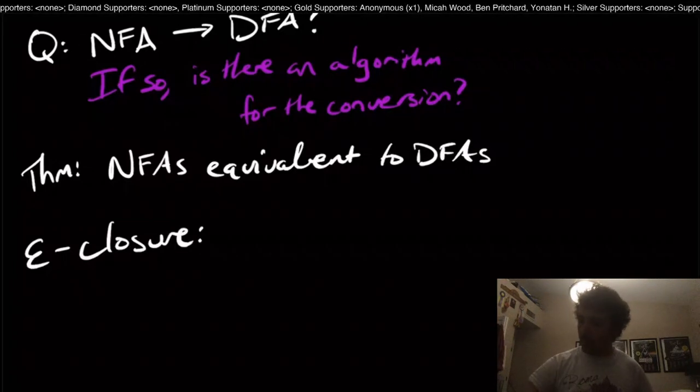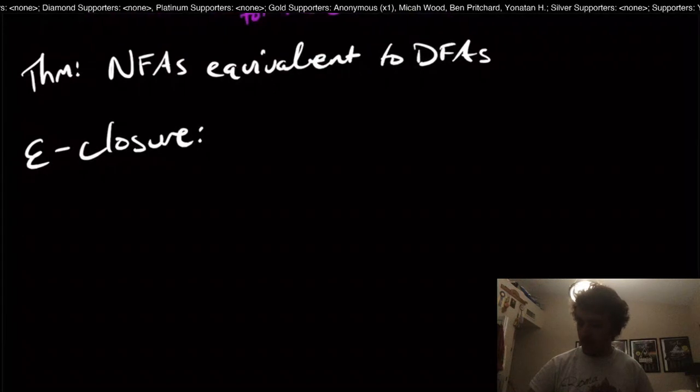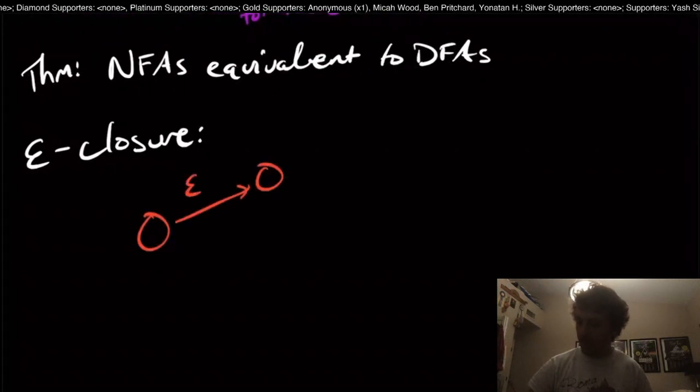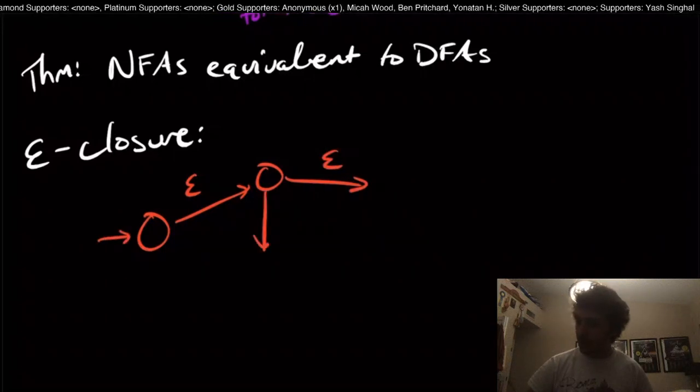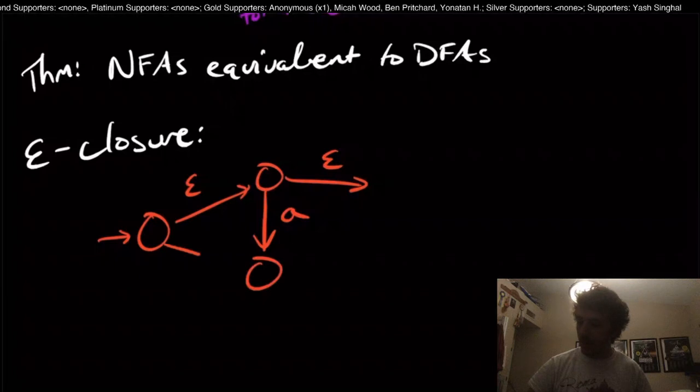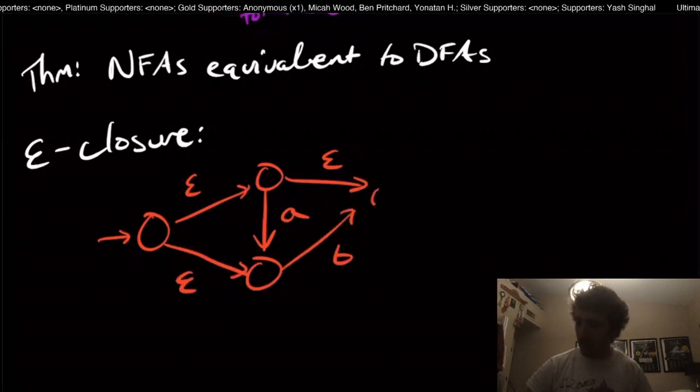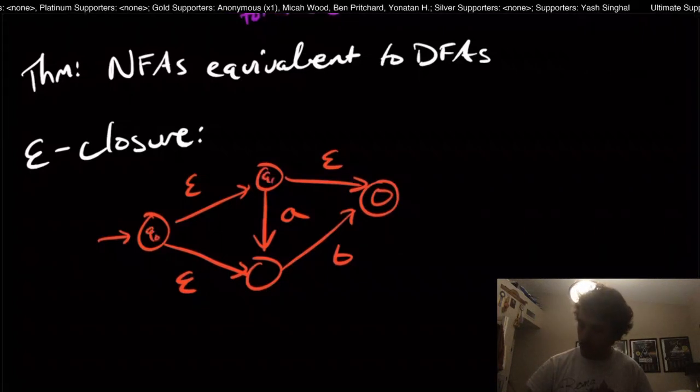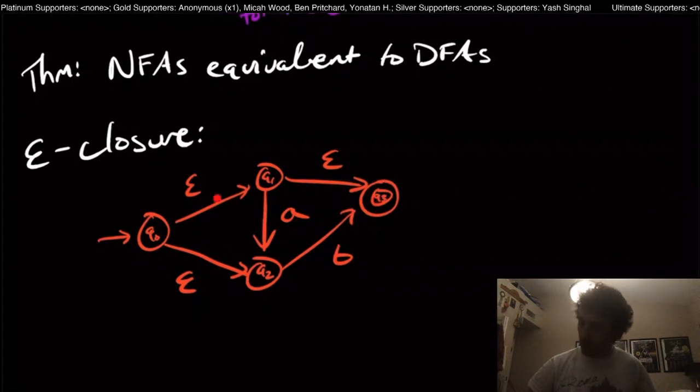So what does it really mean? Well, suppose that we have an NFA right here, and let's just say that we have a bunch of states, and let's just say we have some epsilon, maybe that's a start state, and we have some epsilon transitions, maybe this is an A here, epsilon here, and then B here. And I'm going to call this Q0, Q1, Q2, and Q3.